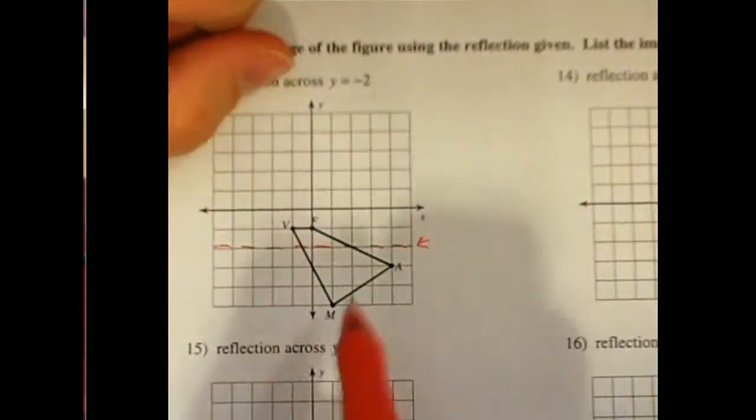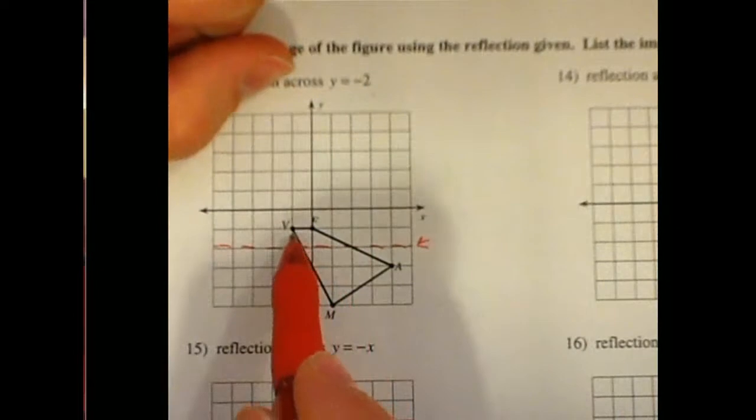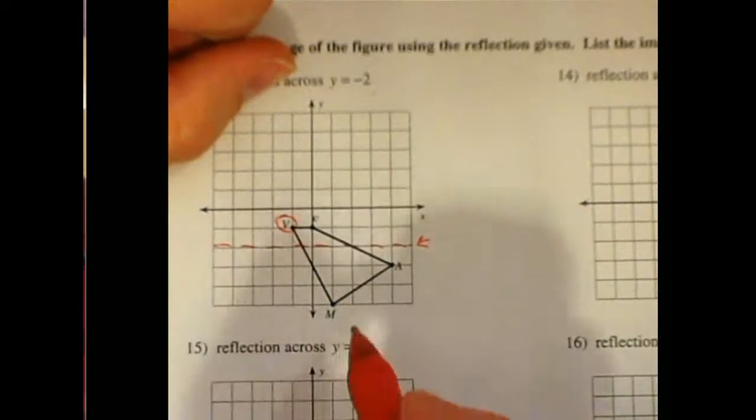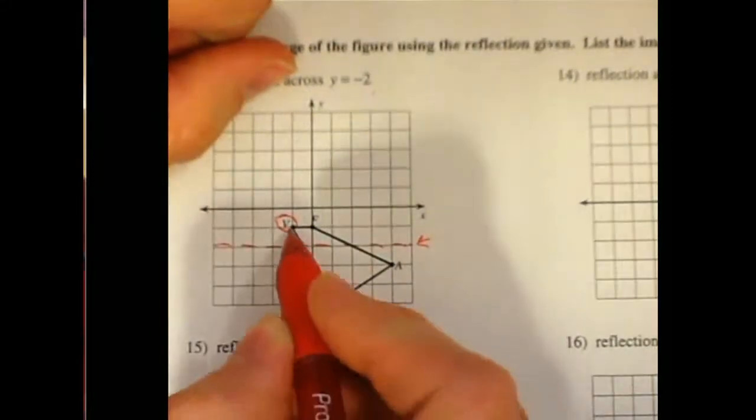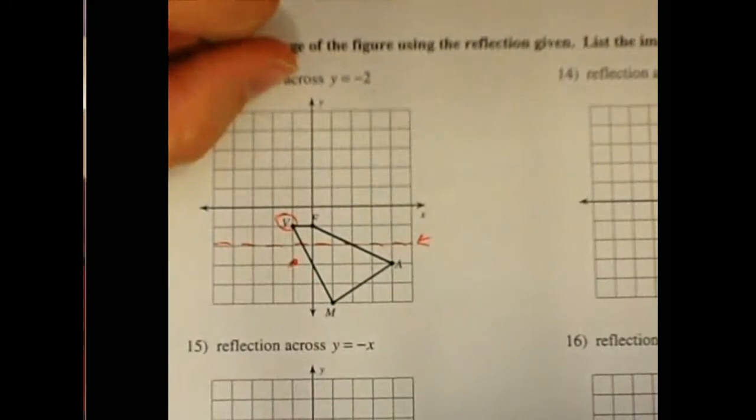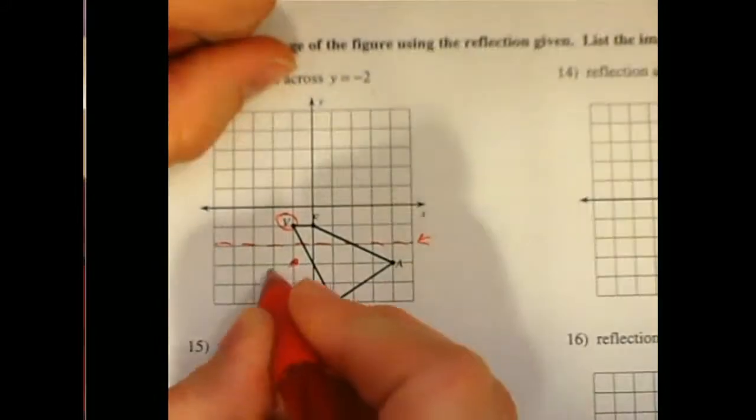each point needs to individually get reflected over that line. You can see that this point v is exactly 1 above that line of reflection. So I am going to now mirror it to be 1 point below that line. Here I am going to label that v prime.